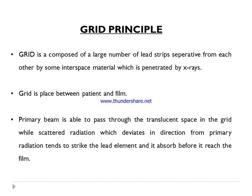A grid is mainly made up of a large number of lead strips. They are separated from each other by interspace materials which are penetrated by x-rays. A grid is placed between the patient and the film. Grid cassettes are also available in the market, and the grid can also be placed under the patient. The grid has the ability to pass the primary beam through translucent transmission spaces.